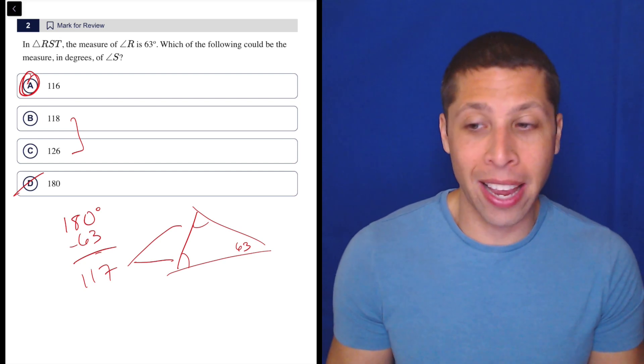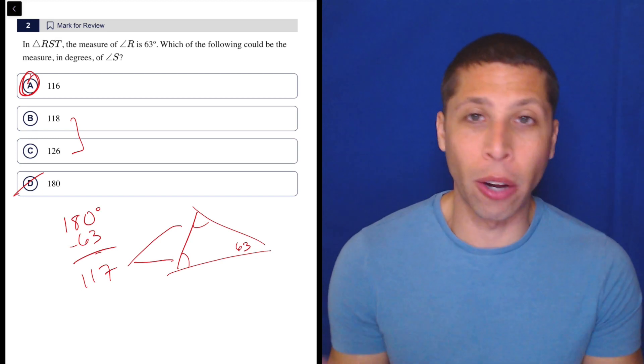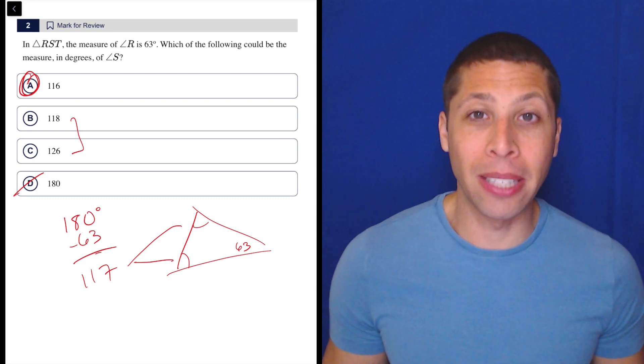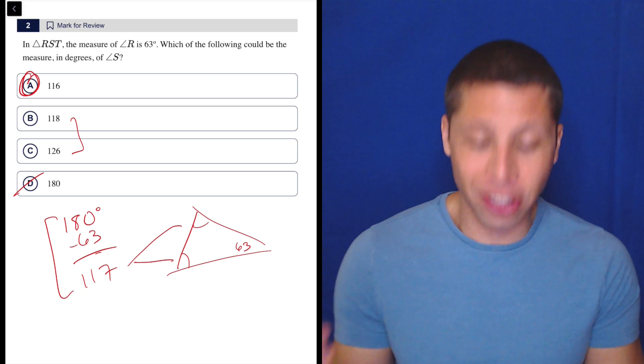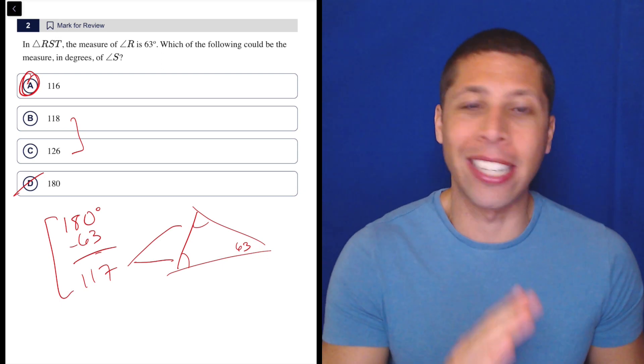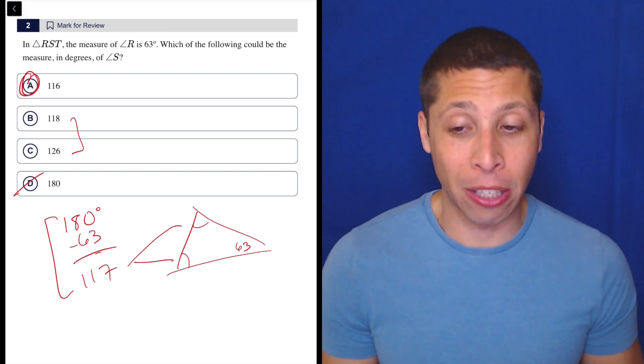And so that's why it kind of has to be just choice A. But I feel like people would get flustered by this because they're like, 'Oh, I don't know the angles, I only have one.' But yeah, it's conceptual. It's about how many degrees you can have total. So if you just did this subtraction, you should never have had any doubt here because only one thing makes sense when you've done the subtraction.